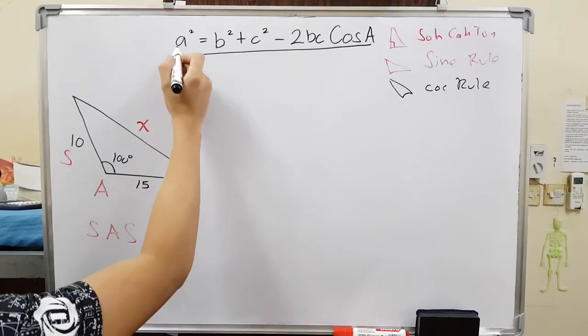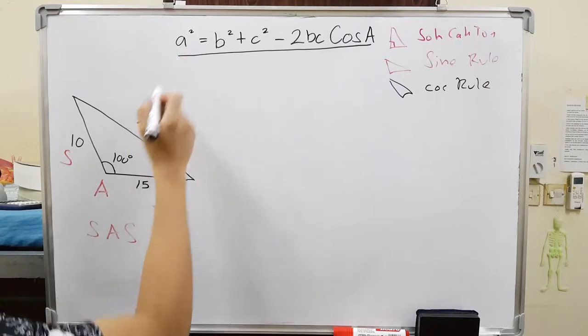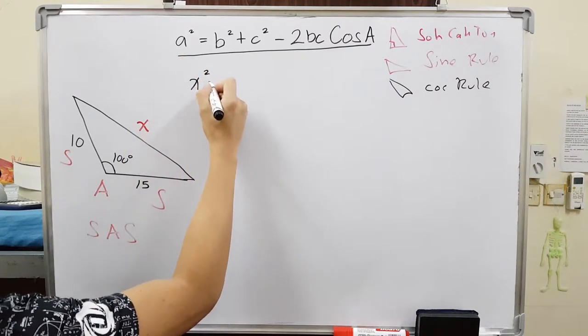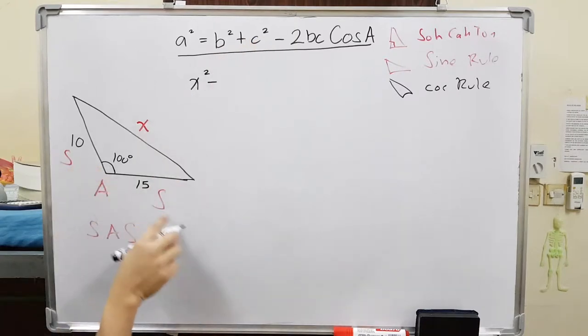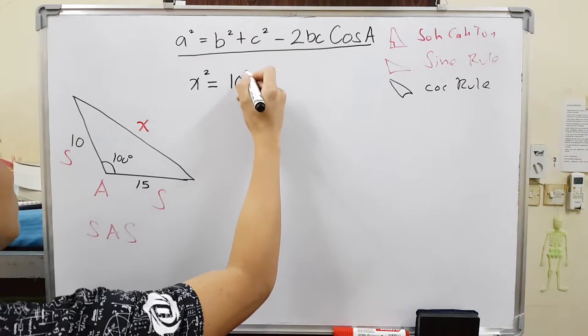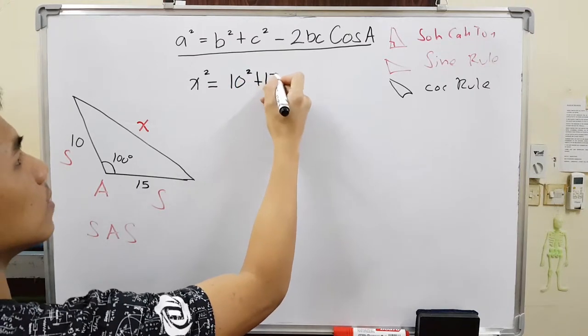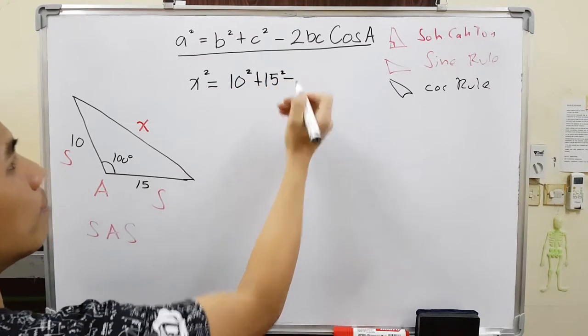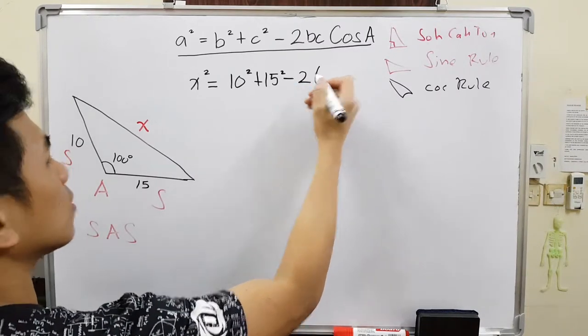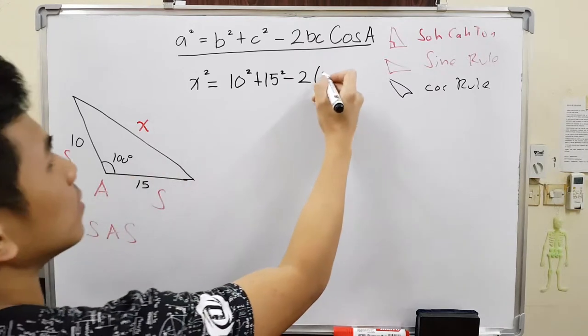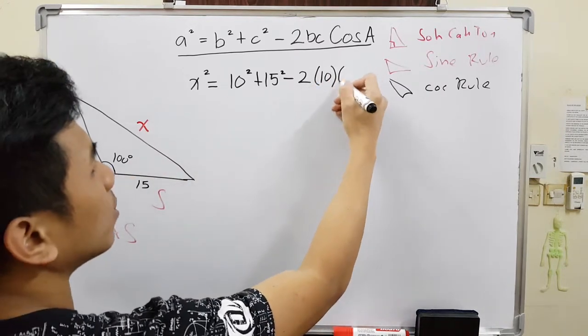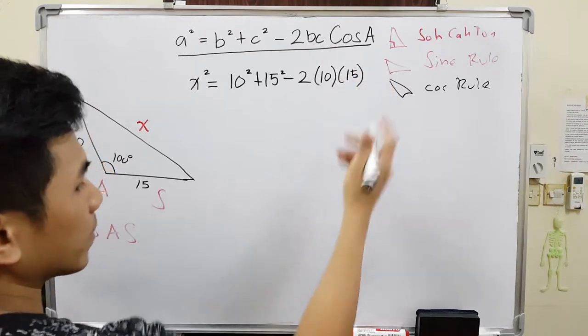So here, a squared. So when you say a squared, that is your missing side. So that is our x squared. Minus b squared plus c squared. Those are the two sides that are given. So equals to 10 squared plus 15 squared. Minus two times the b. So it doesn't matter which one is b or c. You're multiplying.